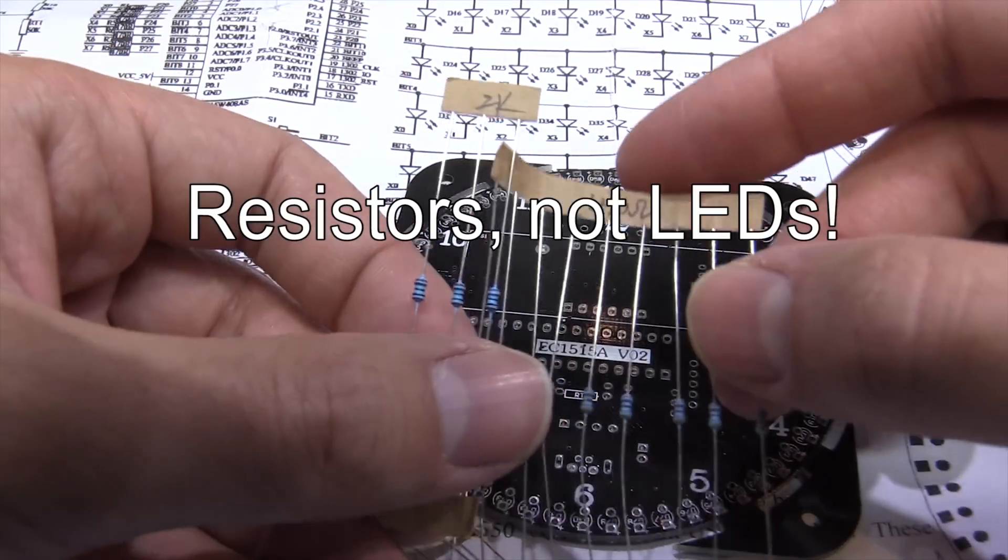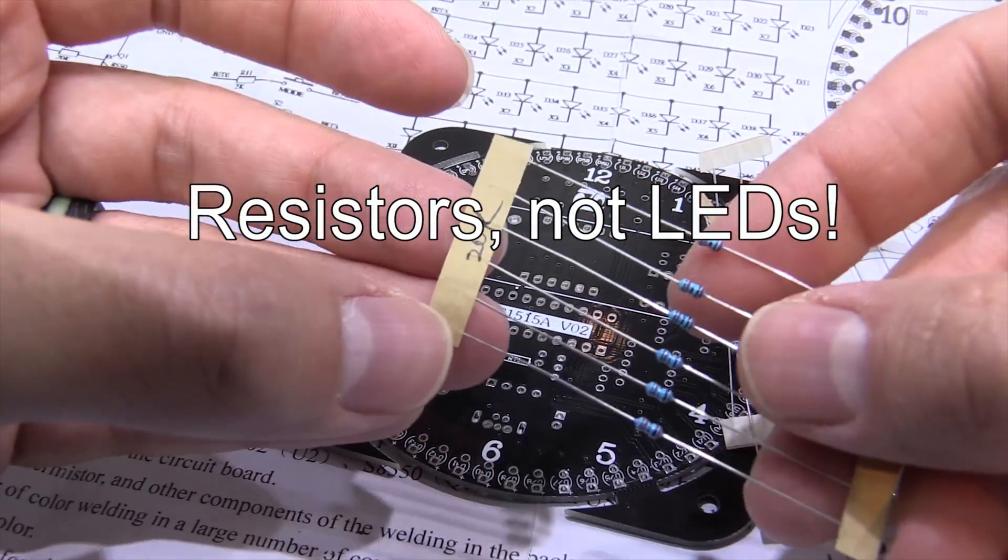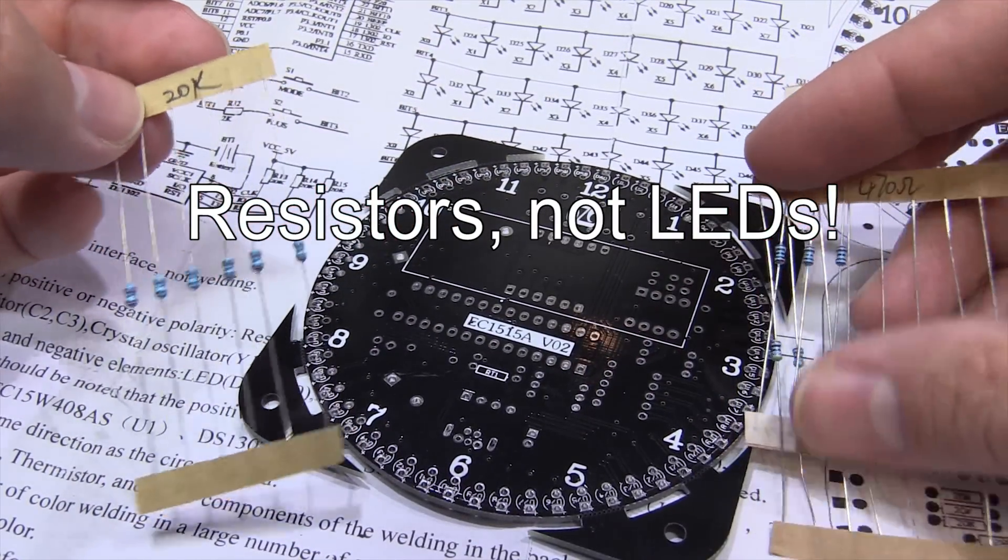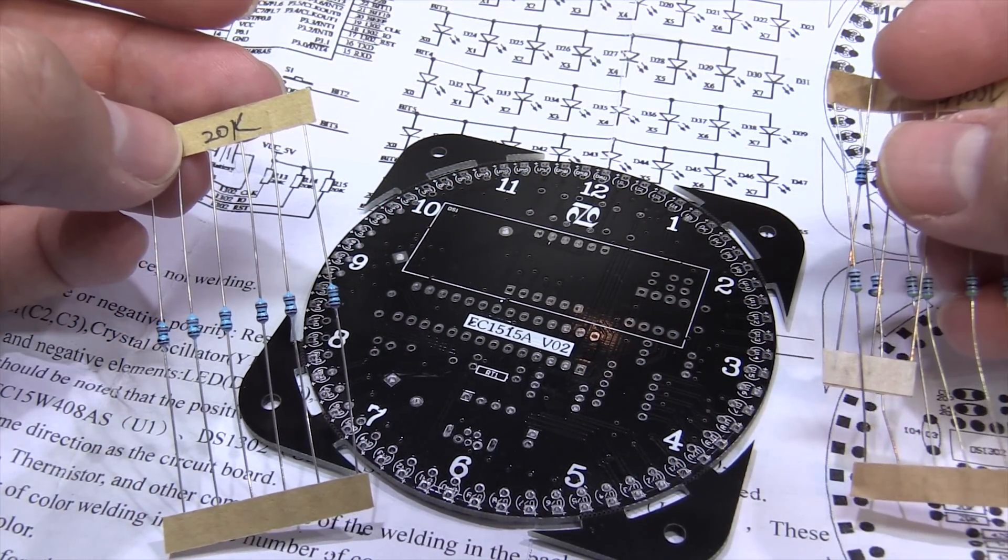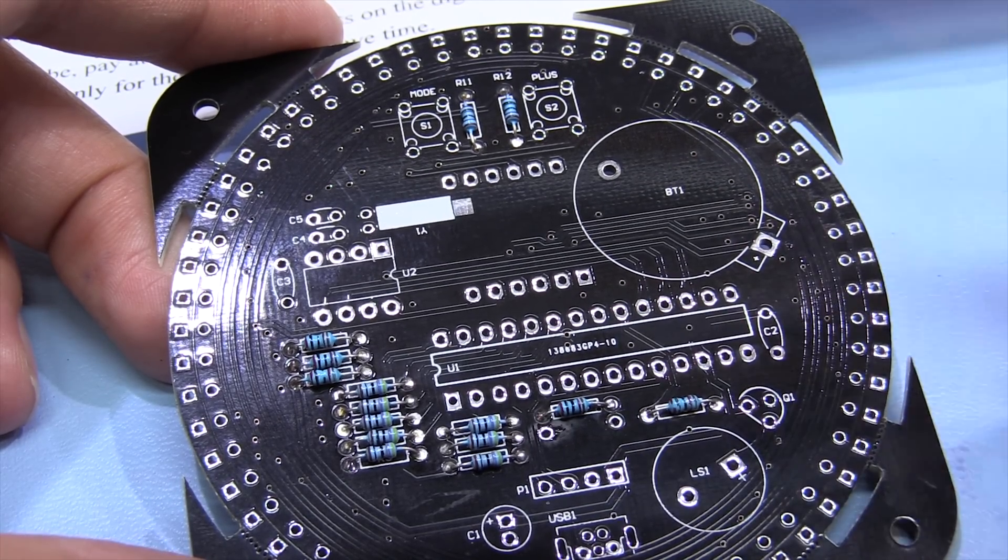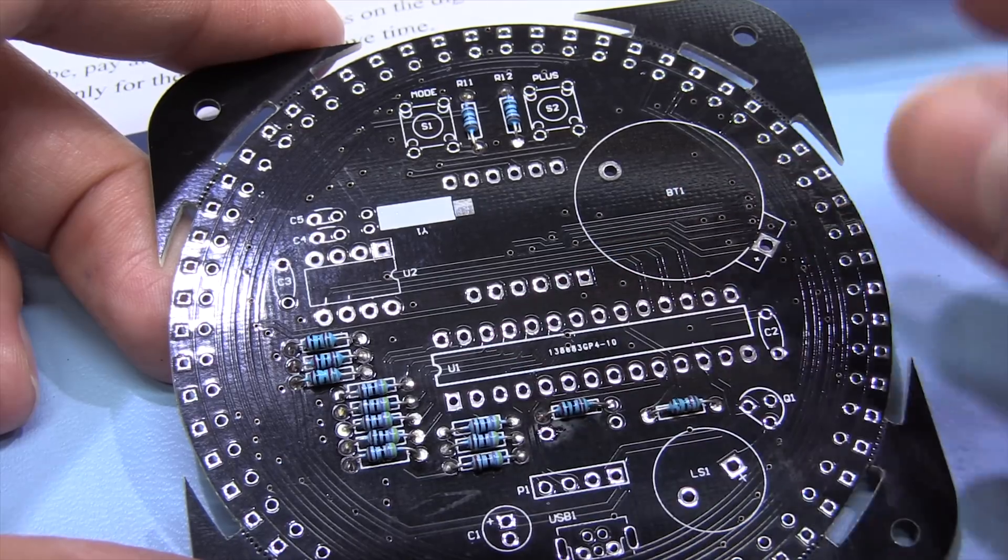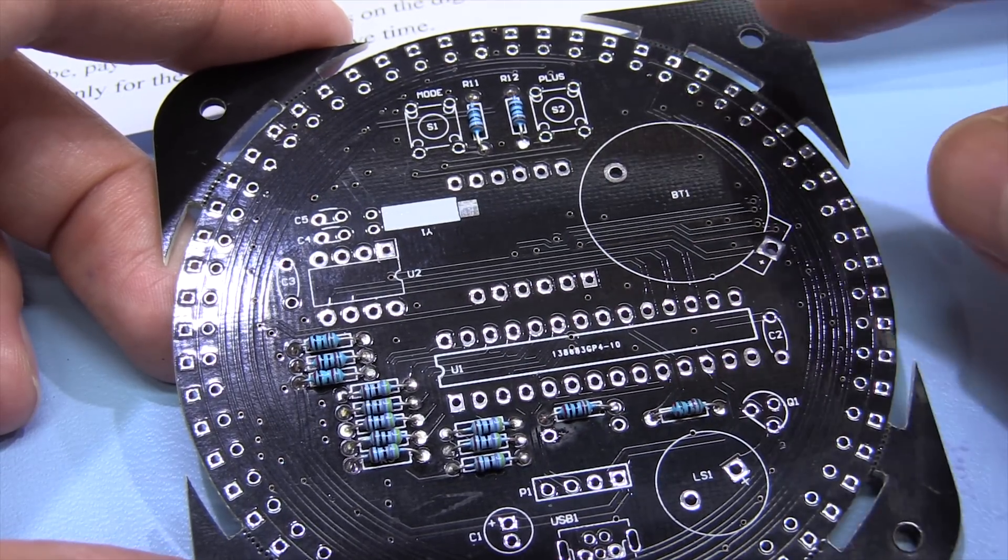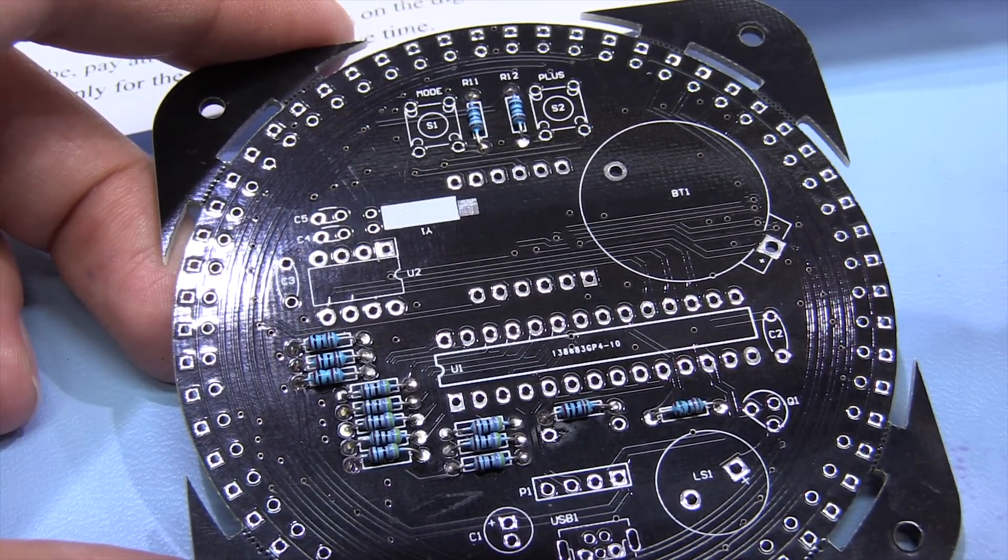So we'll start with the LEDs and the LEDs are all marked so 470 ohms, 2k and 20k and so we'll start with those and then there's a few diodes and then we'll have the LEDs. So that's all the resistors in place and it looks like they give you one extra resistor for each resistor value so in case you mess up you've still got another spare. I think next I'm going to put in some of these capacitors and then the two switches up here.